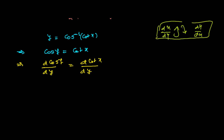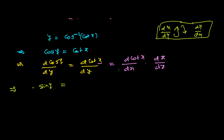So differentiating with respect to y — you can differentiate with respect to x also, there is no problem. The derivative of cos y with respect to y is minus sin y. For the derivative of cot x, since the angle is x, we differentiate cot x with respect to x and then multiply by dx/dy. The derivative of cot x is minus cosec²x. So we get minus sin y equals minus cosec²x times dx/dy. The two minus signs cancel.